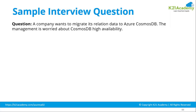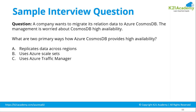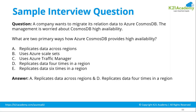A company wants to migrate its relational data to Azure Cosmos DB and the management is worried about Cosmos DB high availability. What are two primary ways Azure Cosmos DB provides high availability? A — it replicates the data cross-region; B — it uses Azure Scale Sets; C — it uses traffic manager; or D — it replicates data four times in a region. The answer is A and D. Traffic manager is not coming into the picture — Cosmos DB is a managed service and you don't deploy a traffic manager to replicate data.